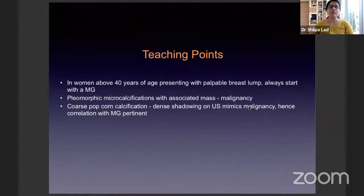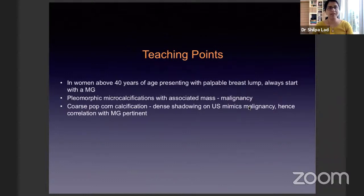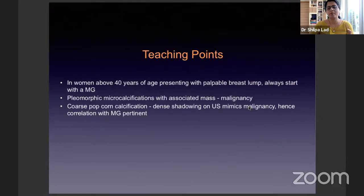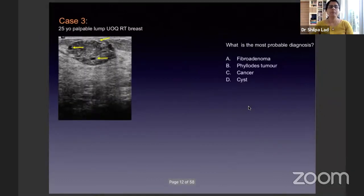Teaching points: in women above 40 years of age presenting with a palpable breast lump, always start with a mammogram. If there are pleomorphic microcalcifications associated with a mass, it is more likely to be malignant. Coarse popcorn calcifications leading to dense shadowing on ultrasound mimics malignancy — hence correlation with the mammogram becomes very, very important.